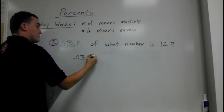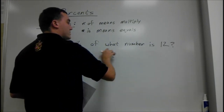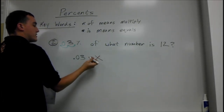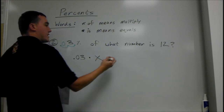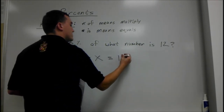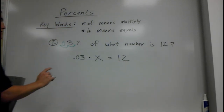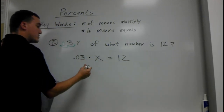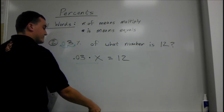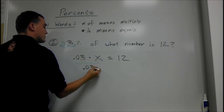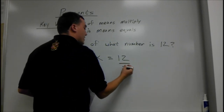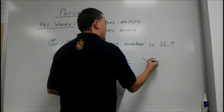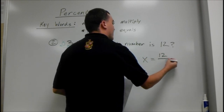Of means times, multiply. What number? So our number is x. So .03 times x — is means equals — 12. Next, to solve this equation, since we're solving for x and we're multiplying by .03, what we have to do is divide by .03. And if you do it on one side, you've got to do it to both sides. So we have x equals 12 divided by .03.